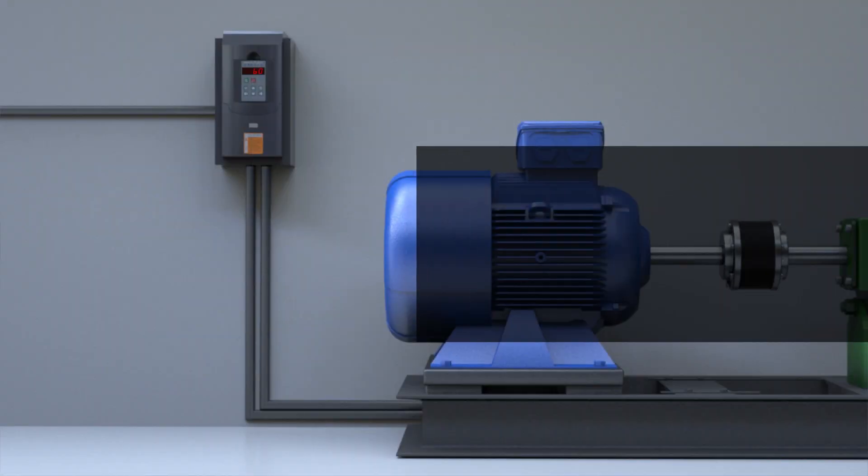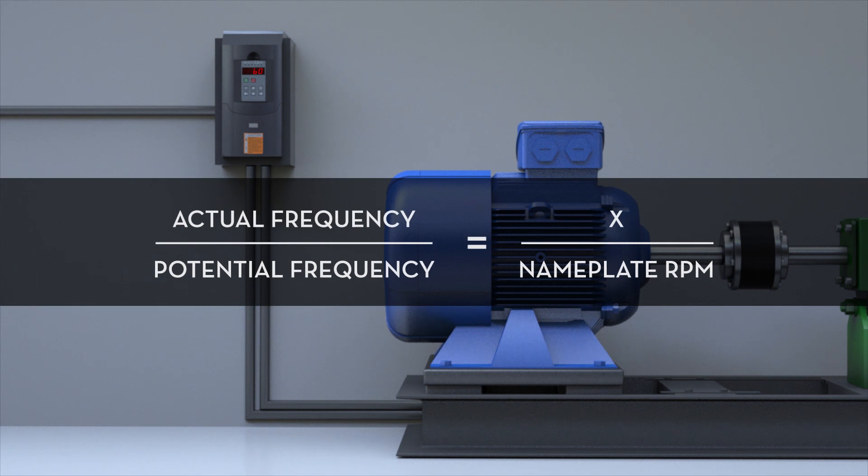The equation to calculate 1x is the actual frequency divided by the potential frequency equals x divided by the RPM on the machine nameplate.